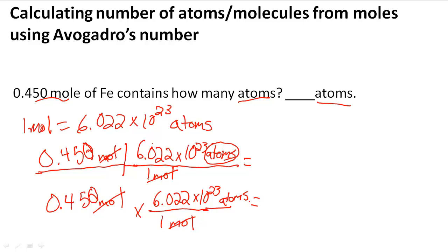When you do this, if you're multiplying by hand, you could write it out in standard notation. Or if you're using a calculator, make sure you can use scientific notation and that you're inputting the numbers correctly. So 0.450 times 6.022 times 10 to the 23rd is going to give me 2.7099 times 10 to the 23rd atoms.